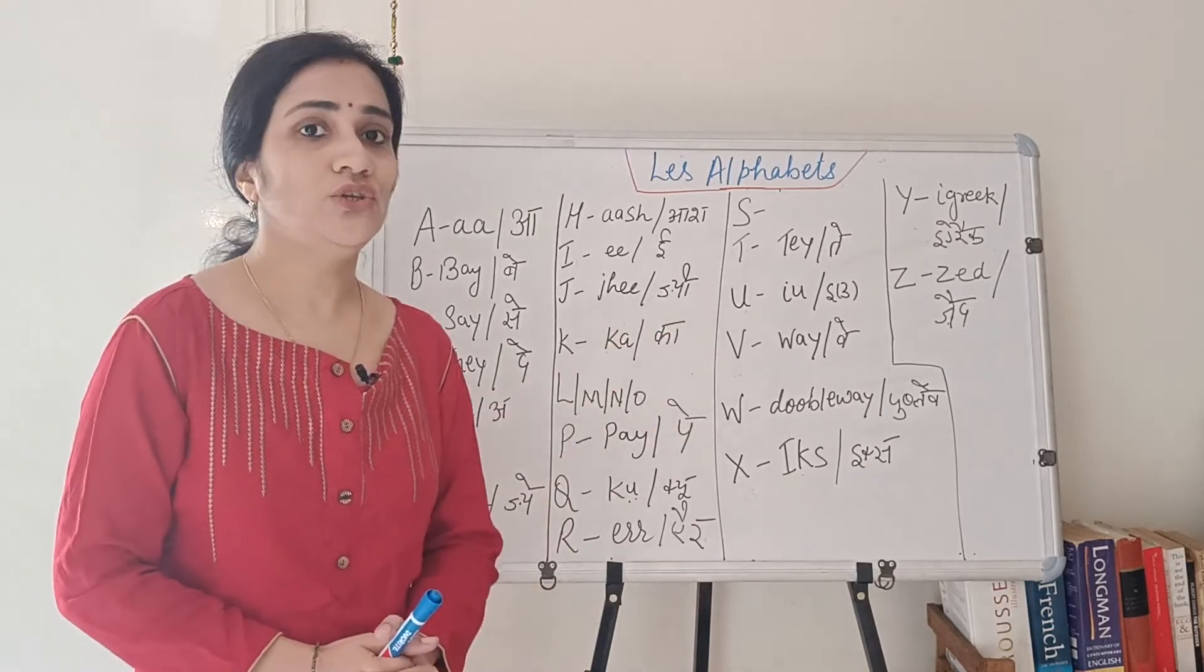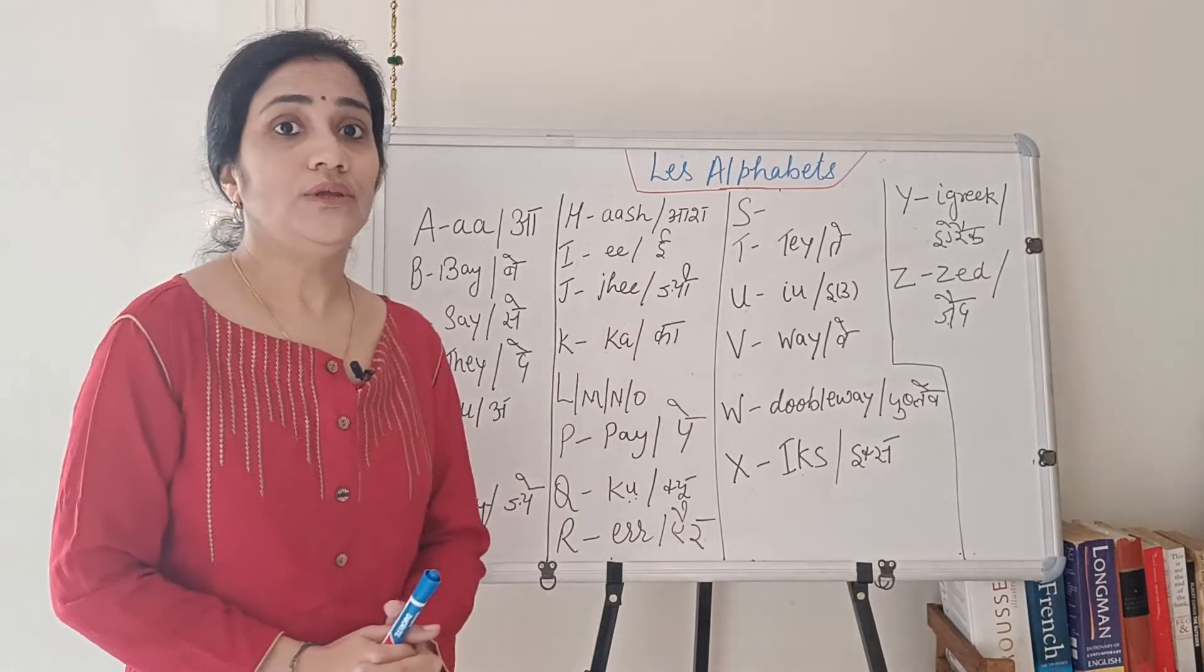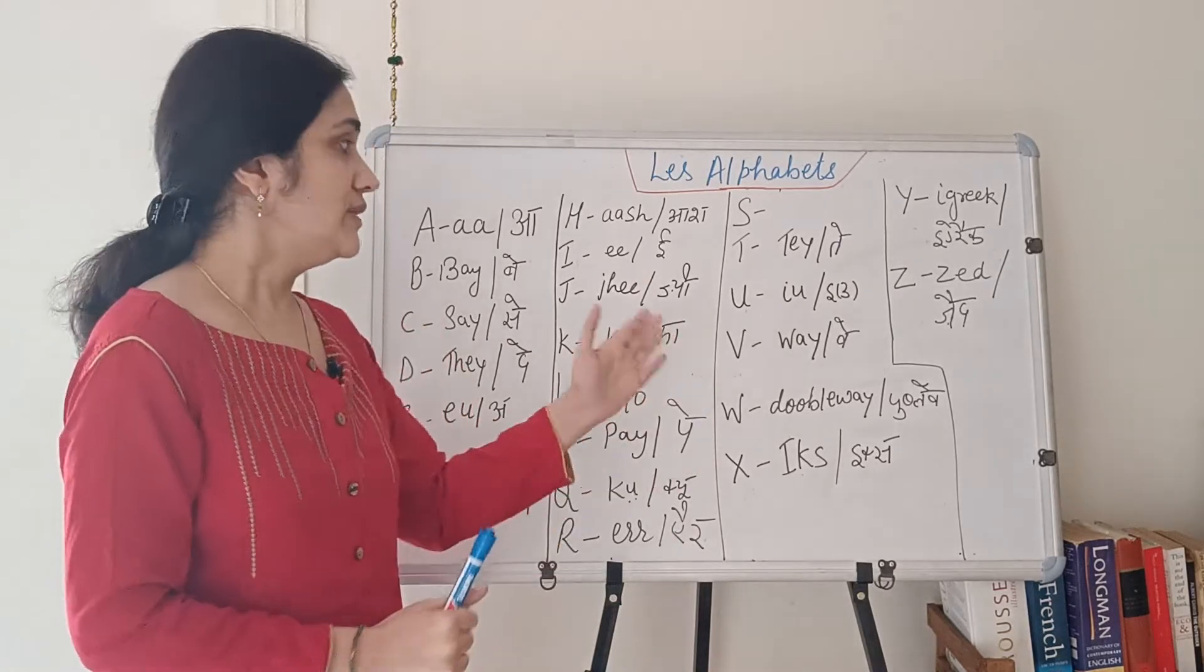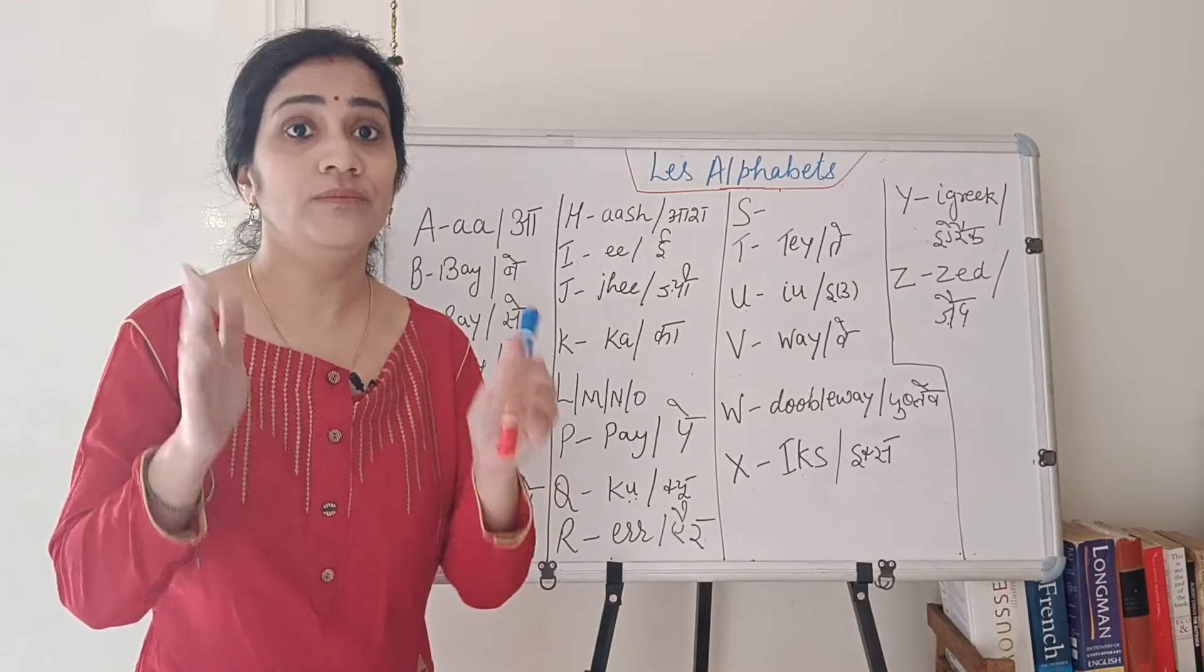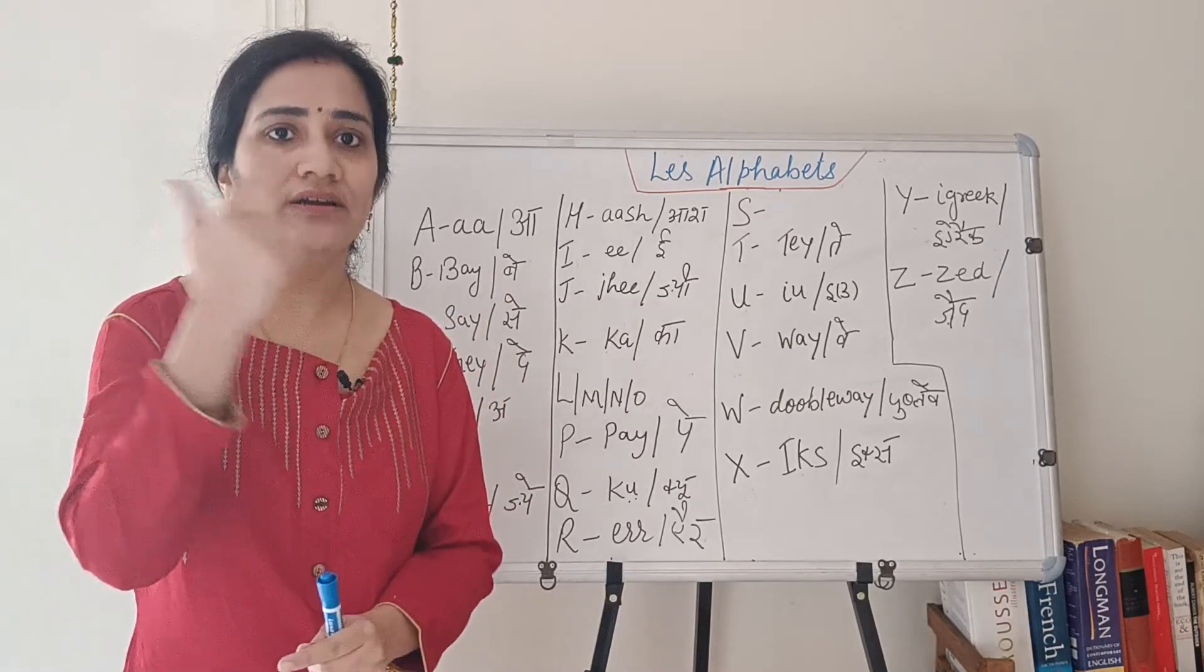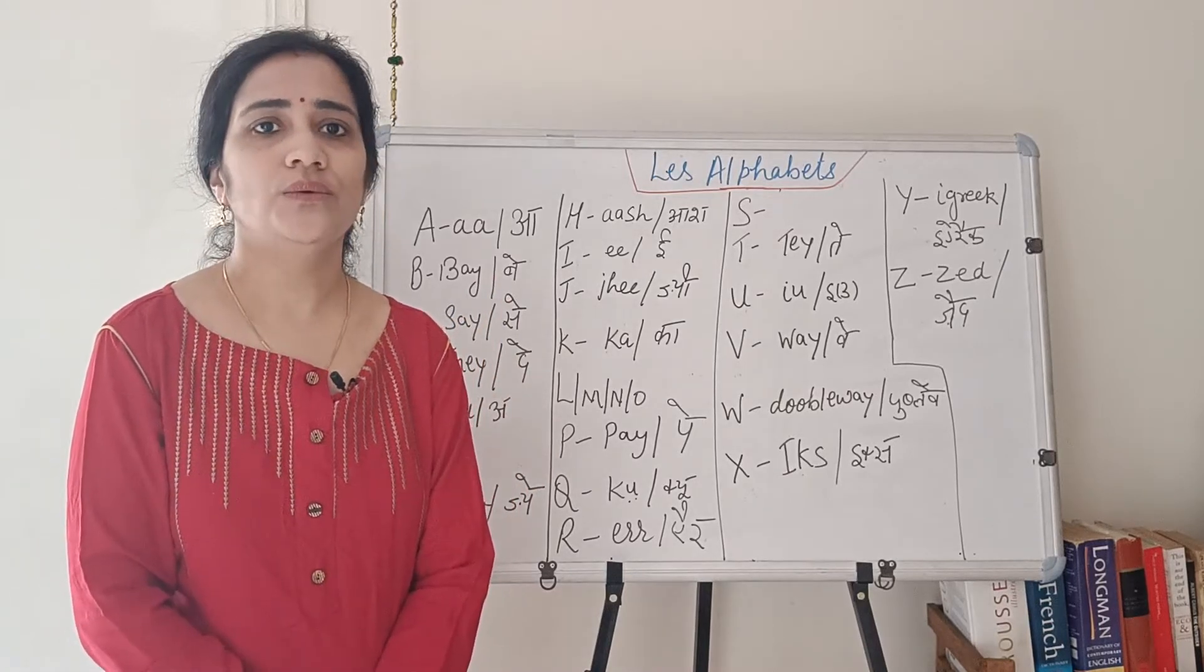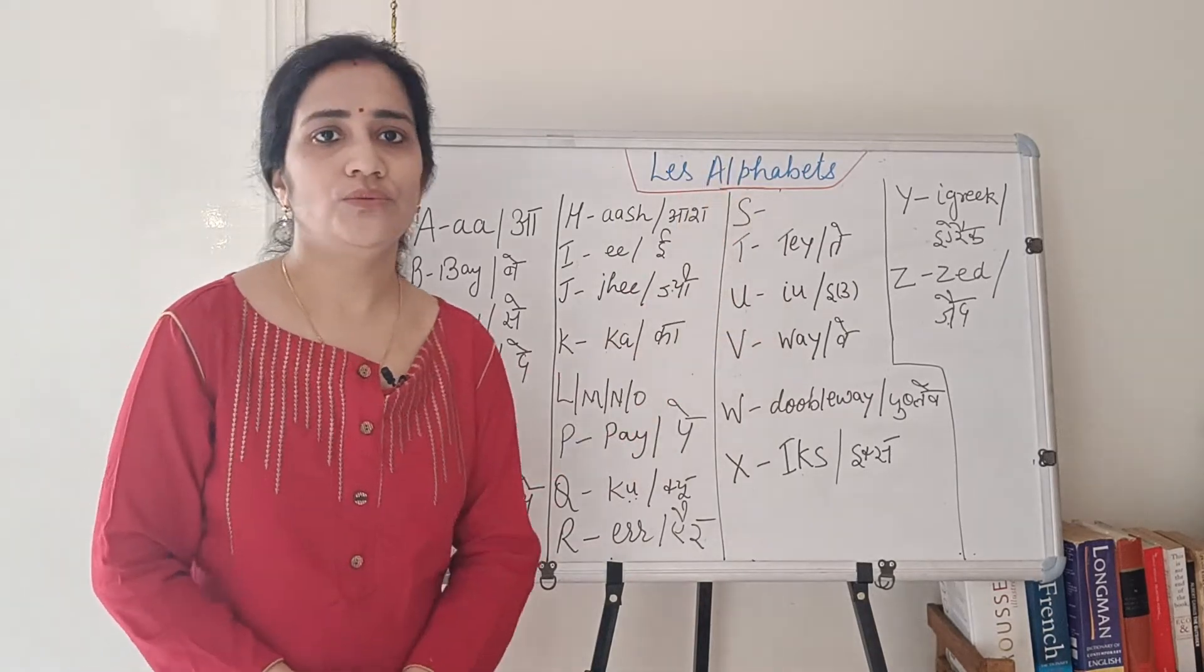Now the next letter is U. So for this, U sound U. So for this letter, what do you have to do? You have to round your lips and say the English letter E and U together. English letter E and U together while rounding your lips, and say U. And you will get the U letter sound of French.